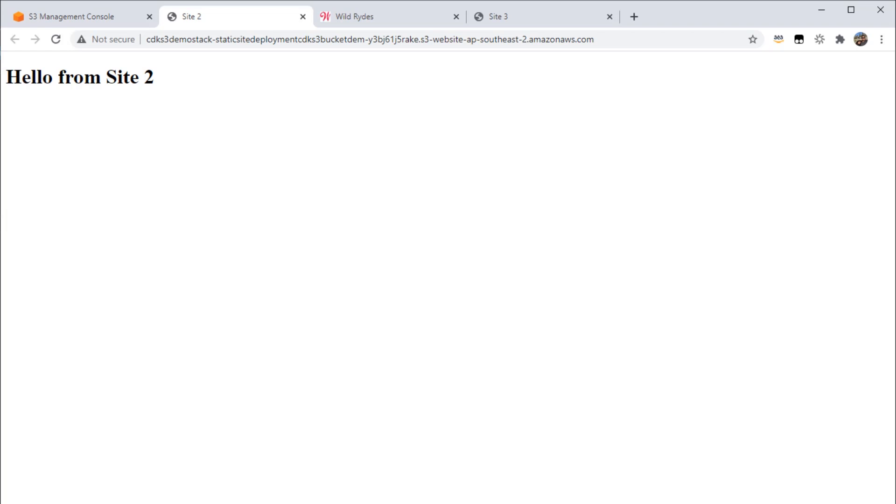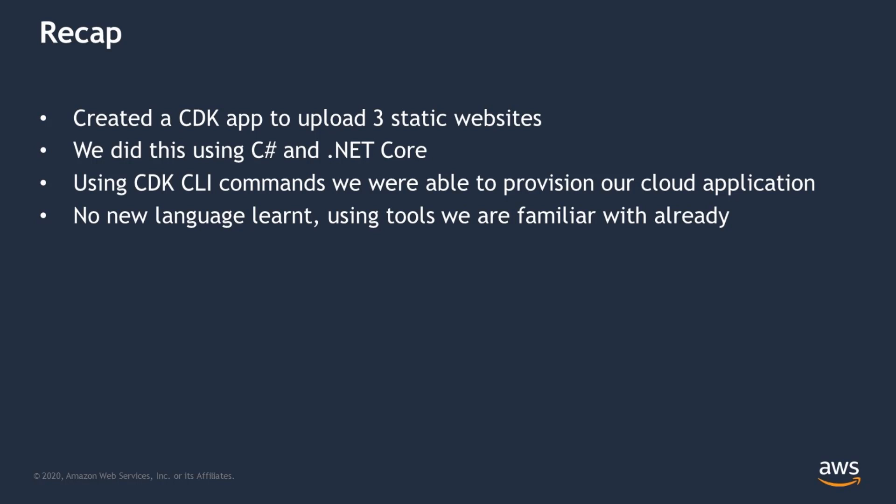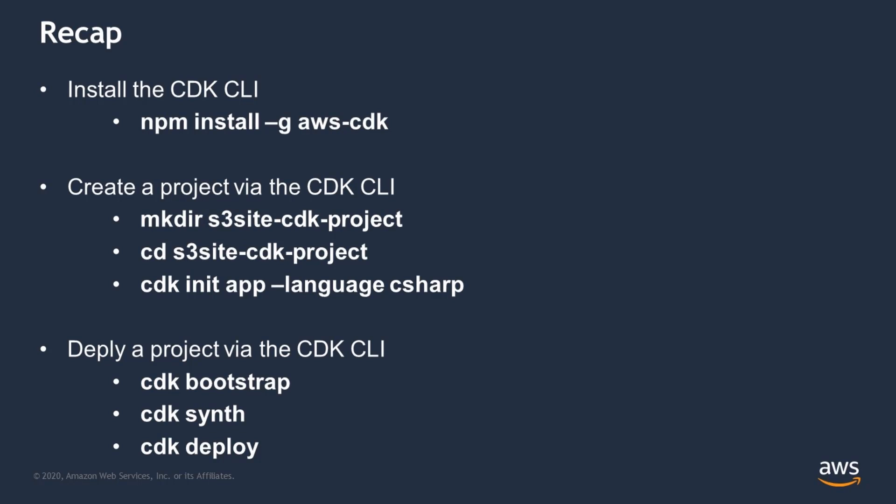Let's recap what's happened in this video. We created a new CDK app to upload three static websites onto the AWS cloud to be hosted on S3 buckets, using C#, .NET Core, Visual Studio, and Amazon.CDK NuGet packages. We also used CLI commands that were able to provision our cloud application onto the AWS cloud and take care of the heavy lifting for us. We didn't have to learn any new languages and only used tools we were already familiar with. Some of these commands are listed on this slide — please go to the CDK landing page or the CDK developer guide for more information. Thank you very much for watching this video, and I hope it was of help to you.